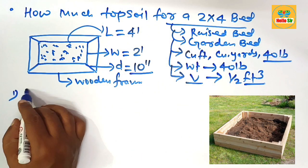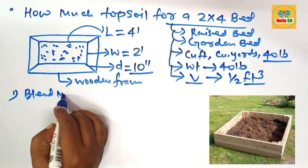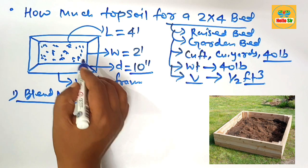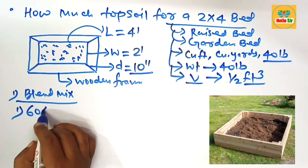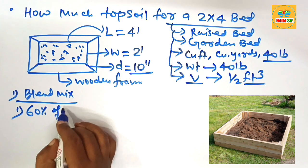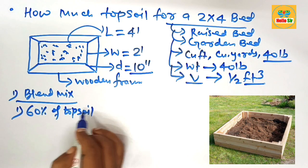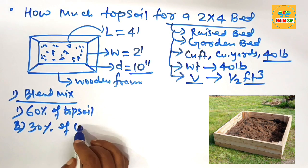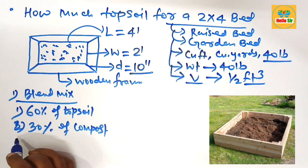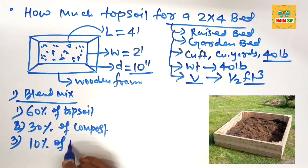A blend mix of topsoil is needed to fill this area. The ratio for this: you prepare 60% topsoil mixed with 30% compost material, mixed with 10% potting soil that is necessary for plant growth.